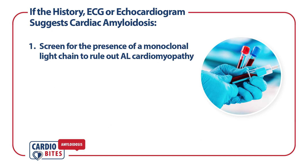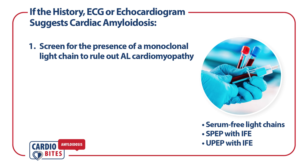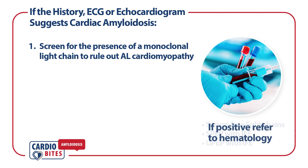If cardiac amyloidosis is suspected based on history, ECG, or echocardiogram, the patient should first be screened for AL amyloidosis. Screening consists of three blood tests: serum-free light chains, SPEP with IFE, and UPEP with IFE. If a monoclonal light chain is identified, the patient should be referred urgently to hematology.